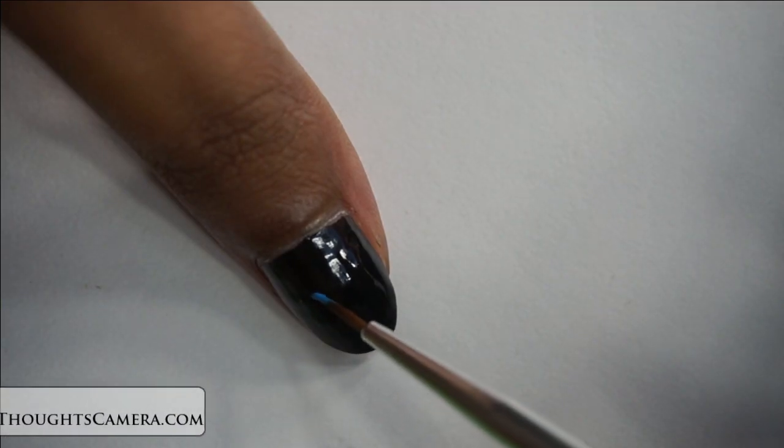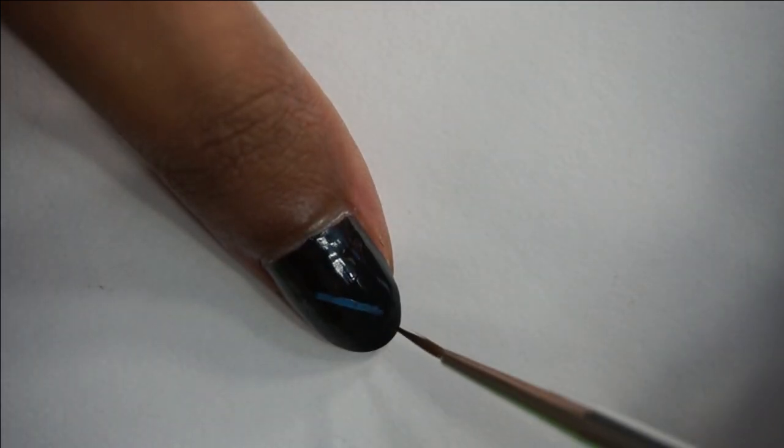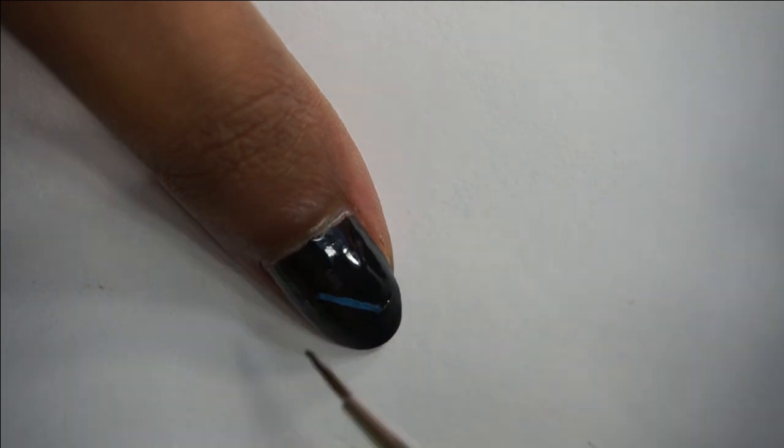Using a thin stripping brush, I'm just creating an X representing clashing lightsabers. Use the black polish again to clean up the look.